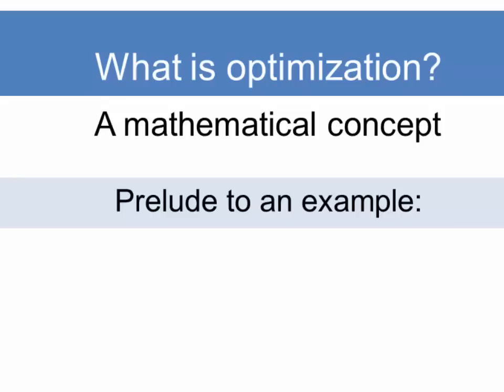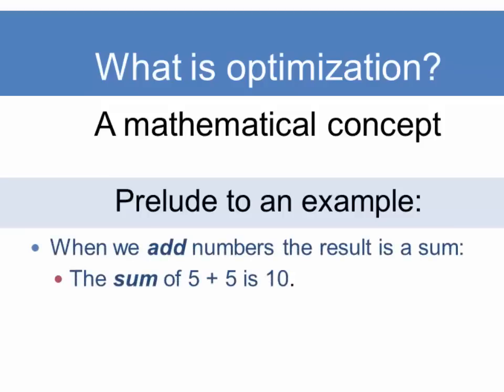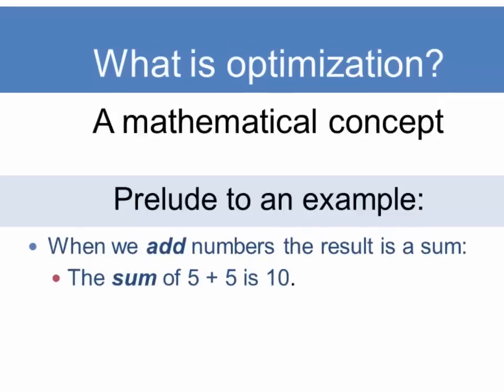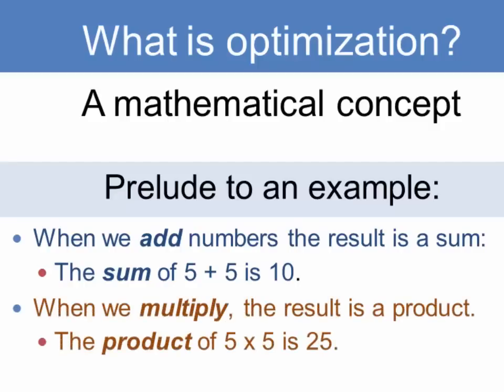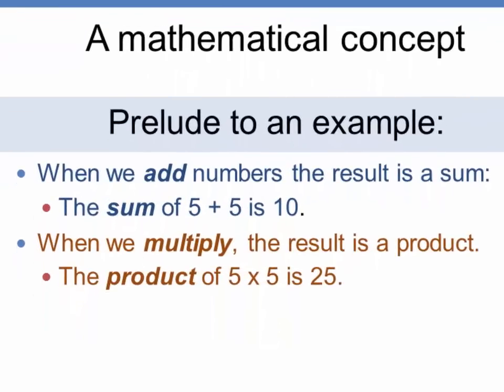As a prelude to an example, note that when we add numbers the result is called a sum, so the sum of 5 and 5 is 10. And when we multiply, the result is called a product, so the product of 5 and 5 is 25. And that difference between a sum and a product is going to be important in our example.